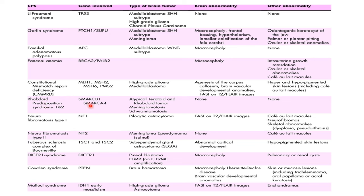Rhabdoid predisposition syndrome has been associated with SMARCB1 and SMARCA4 mutations, typically in atypical teratoid rhabdoid tumour, meningiomas and schwannomatosis. NF1, neurofibromatosis type 1, is associated with NF1 gene alteration in pilocytic astrocytoma. NF2 has been associated with meningiomas and ependymomas. Tuberous sclerosis complex, with TSC1 and TSC2 gene alterations, has been associated with SEGA — subependymal giant cell astrocytoma. DICER1 mutations are typically associated with pineoblastoma and embryonal tumour with multi-layered rosettes. Cowden syndrome, associated with PTEN alterations, has been found in brain hamartomas. Maffucci syndrome associated with IDH1 — early mosaicism is associated with high-grade glioma, typically astrocytomas.